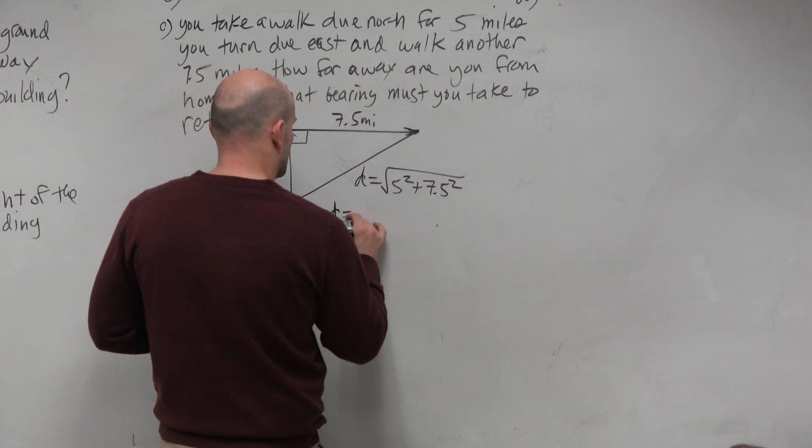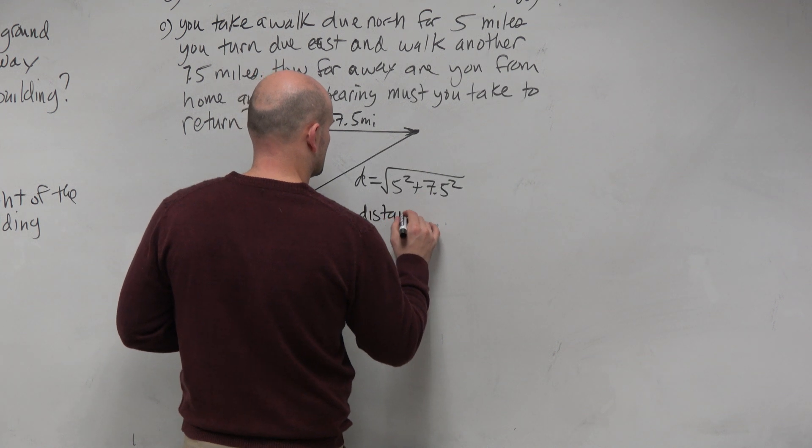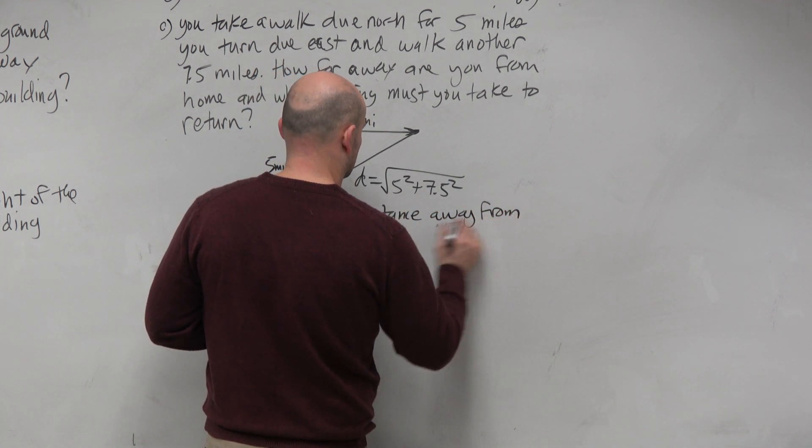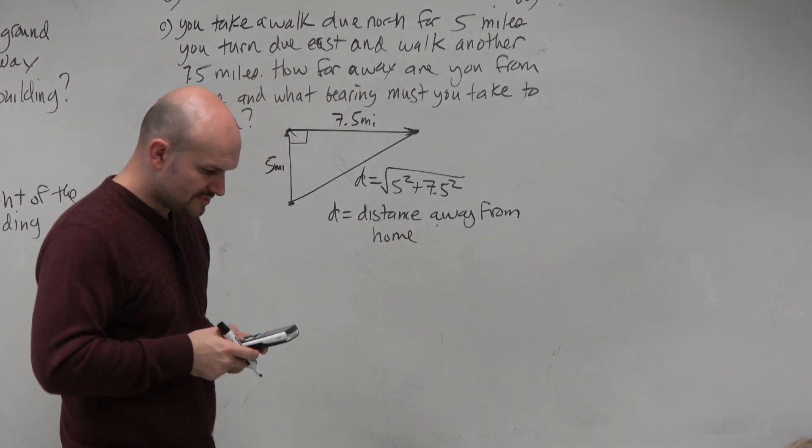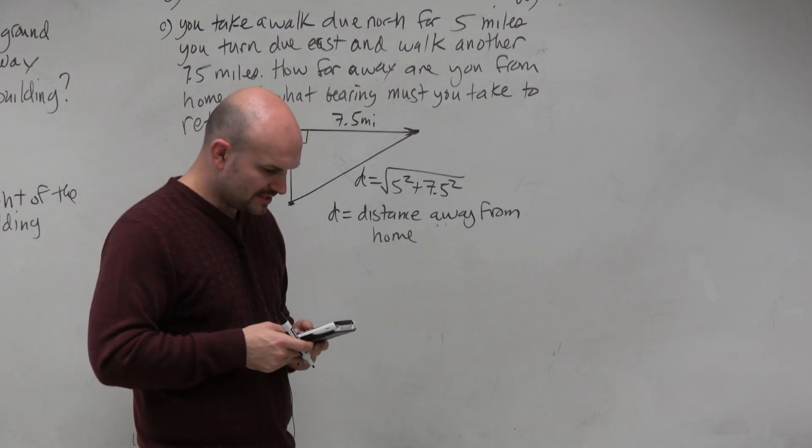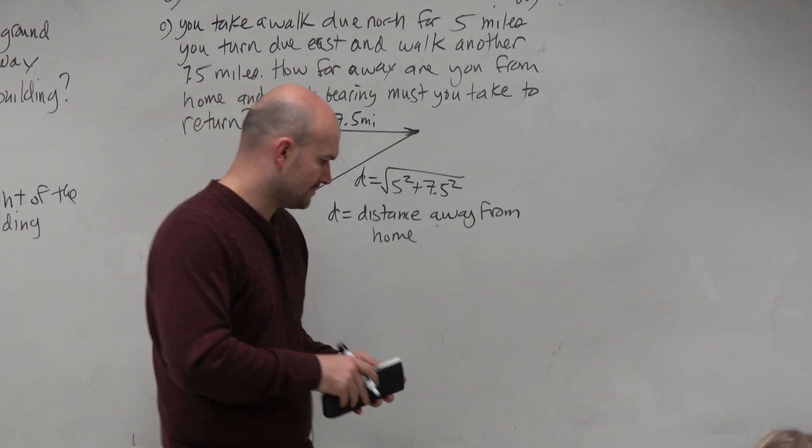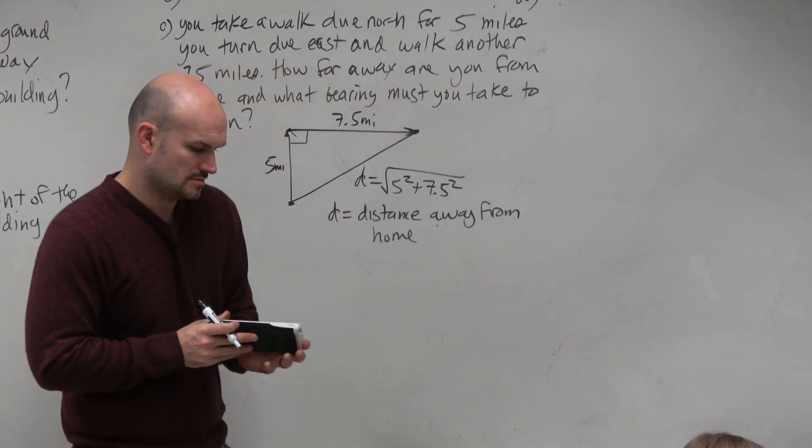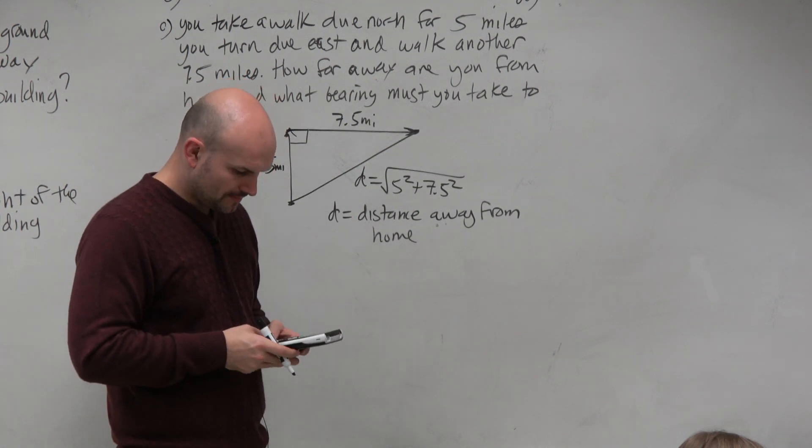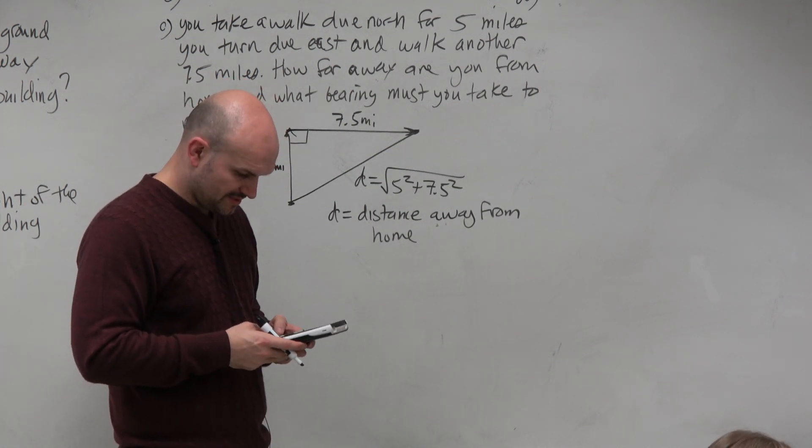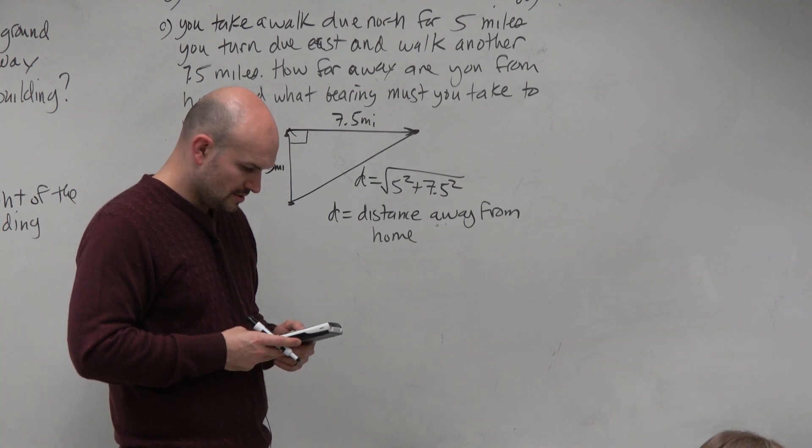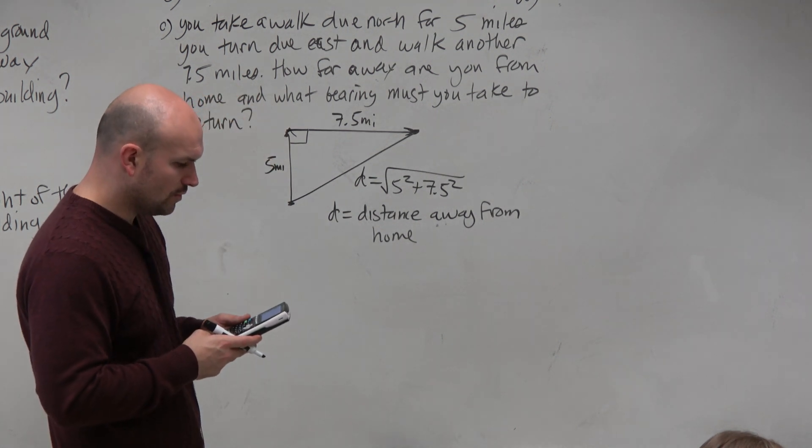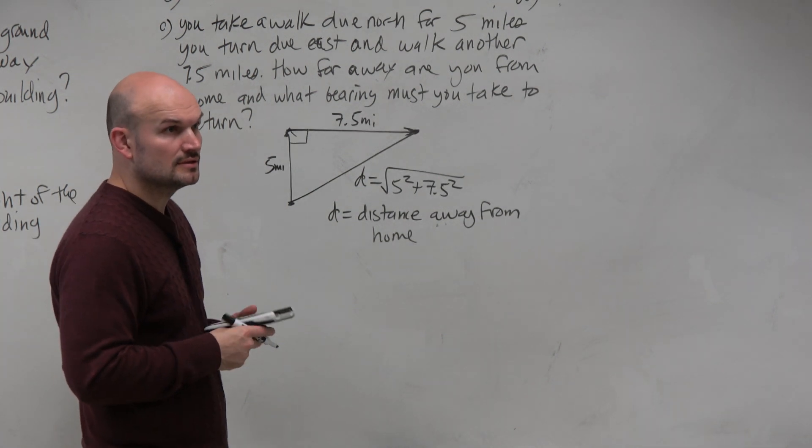So D equals the distance away from home. Okay, so I don't know what 7.5 squared is. So, ooh, that one's out of batteries. So I do 25 plus 7.5 squared square roots. I'm giving 9.013 truncated.